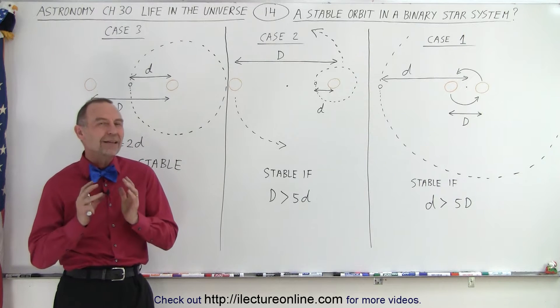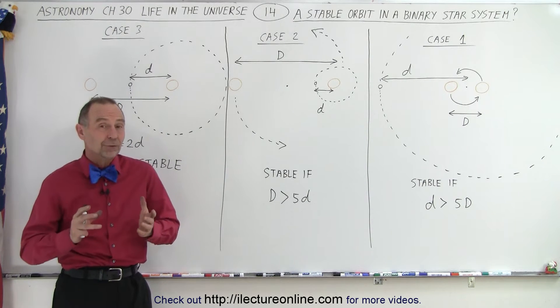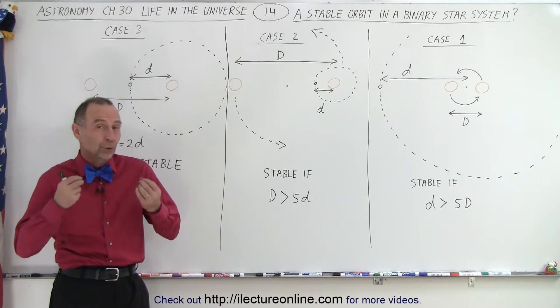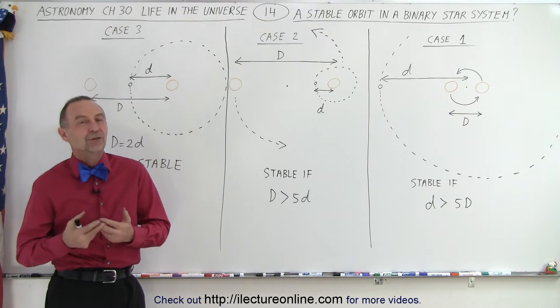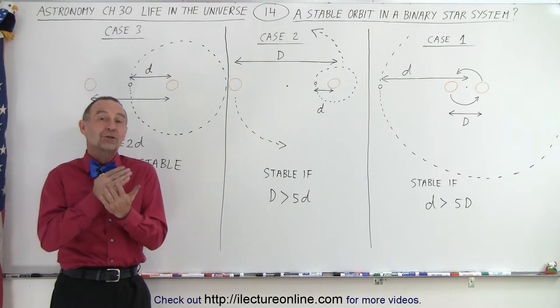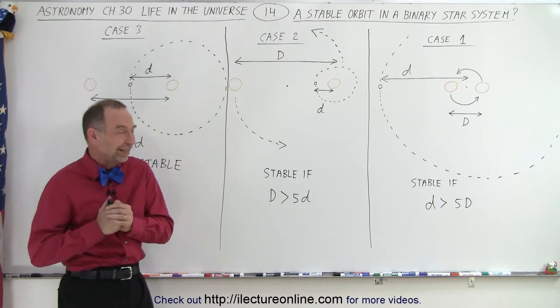Well, not entirely. It is still possible for a planet to have a relatively stable orbit inside a binary star system, but there must be certain conditions that must be met. So let's take a look.